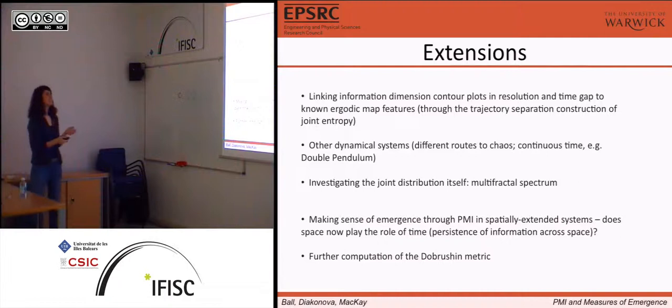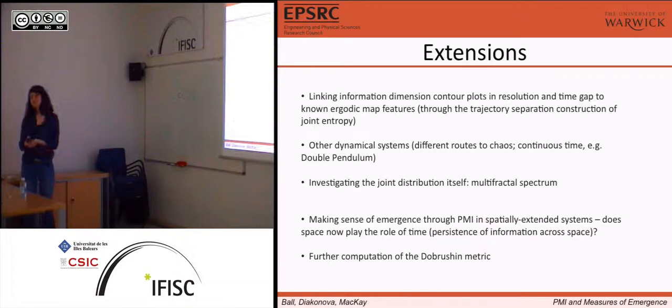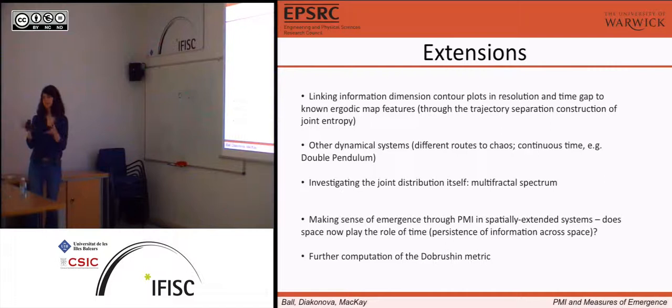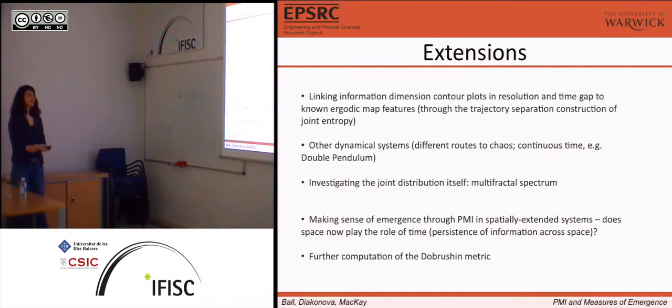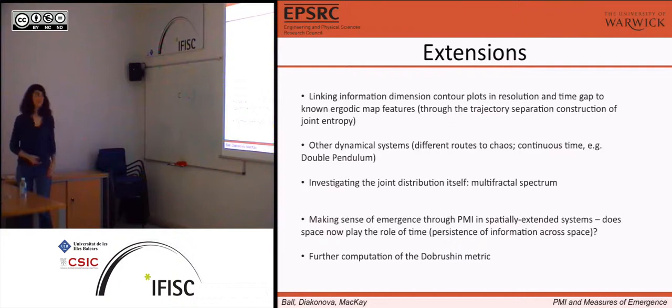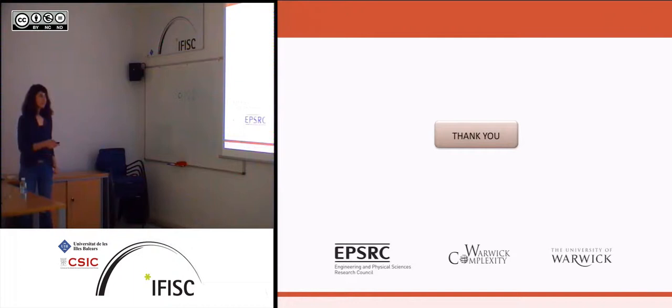The metric is out there — if anyone wants to try, it's profitable. Some extensions and what I'm trying to do: making more sense of what we find with PMI. There are different systems you can look at, such as different groups of chaos or continuous time systems. You can look at the multifractal spectrum, and you can develop a whole theory of applying PMI to spatial extended systems. And of course, further computations with the version metric. That's it, thank you.